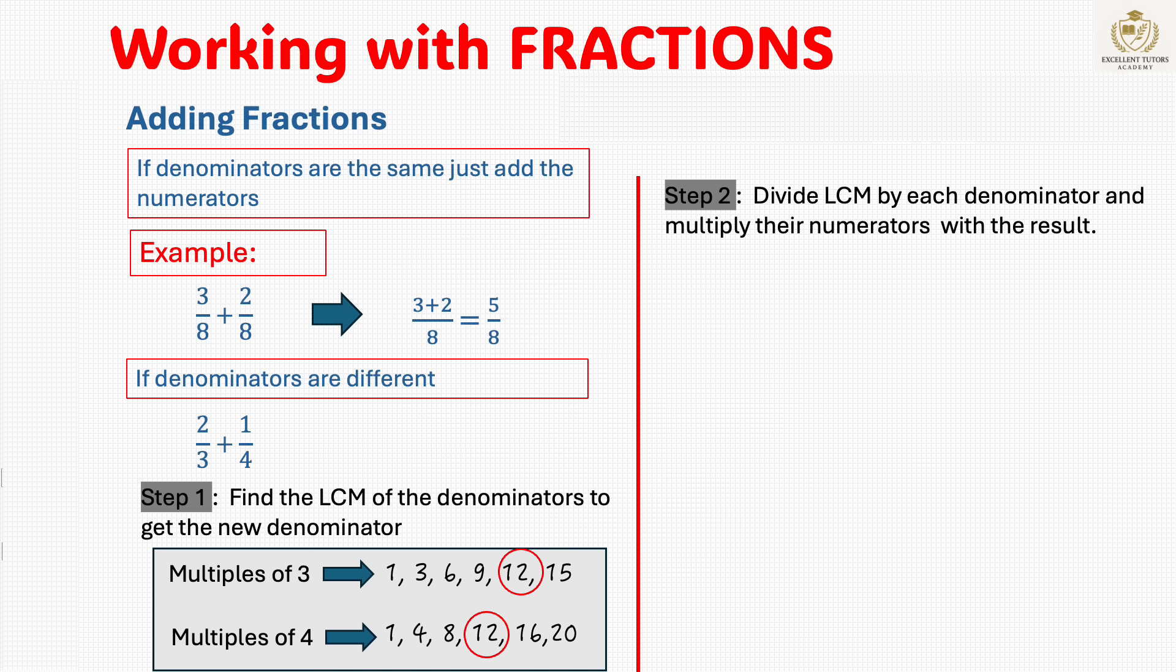Step 2: Divide the least common multiple by each denominator and multiply their numerators with the result. 12 divided by 3 times 2 plus 12 divided by 4 times 1 all over 12. That will give us 4 times 2 plus 3 times 1 all over 12. Step 3: Add the numerators. 8 plus 3 over 12 gives us 11 over 12. Therefore, 2 thirds plus 1 fourth equals 11 twelfths.